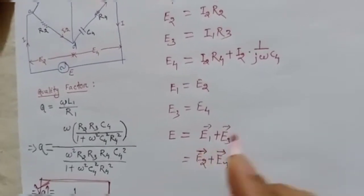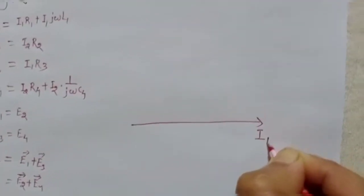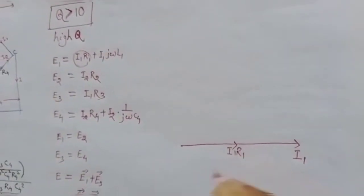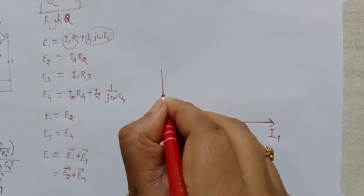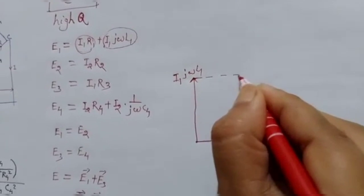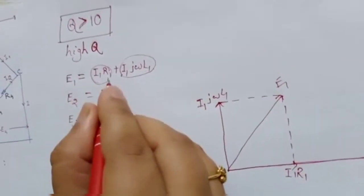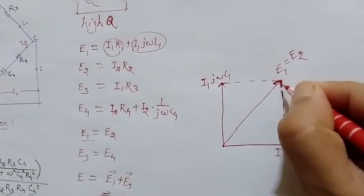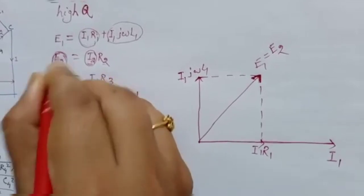Now let's draw the phasor diagram. Taking I1 as the reference phasor, I1·R1 is a resistive voltage drop so it is in phase with I1. Then I1·jωL1 is an inductive voltage drop, which leads I1 by 90 degrees. The phasor sum of I1·R1 and I1·jωL1 gives E1. Since E1 = E2 at balance condition, E2 has the same phasor. And since E2 = I2·R2, I2 must be in phase with E2.